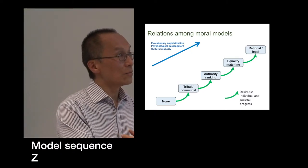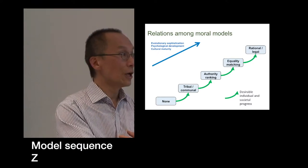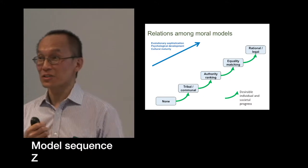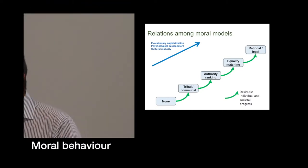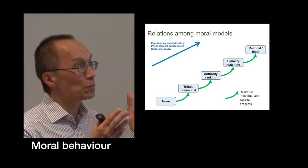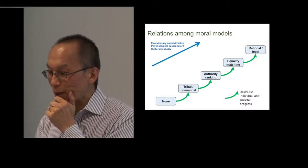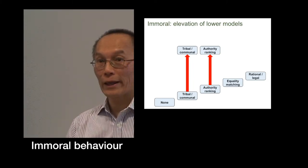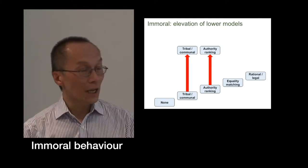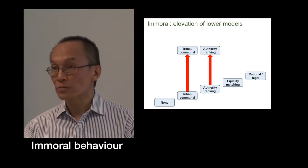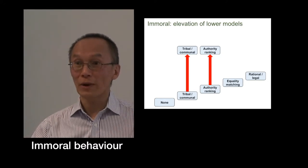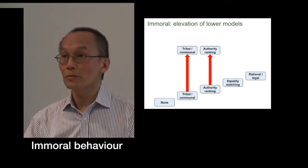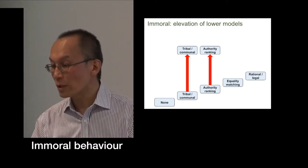Children are down here — they're very tribal and communal, and may not even recognise that their brother or sister has the same value as them. Moral behaviour, then, can be characterised as trying to push individuals or societies up this spectrum. Also, think about immoral behaviour: if there's a natural ordering here, what might happen is people might want to push, say, authority ranking above the others — so, as a dictator, you might push authority ranking so that the rational legal aspects are made secondary.